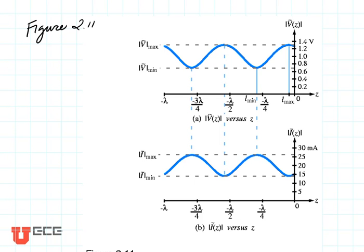Now that you've had a chance to watch a video with some standing waves, let's take a look at the standing wave parameters that are important. The picture shown here in figure 2.11 from your book shows the envelopes of the standing wave. From the last video, it drew the magnitude of the standing wave, and the wave itself was bouncing up and down underneath this envelope. The envelope is what we're going to be talking about now.